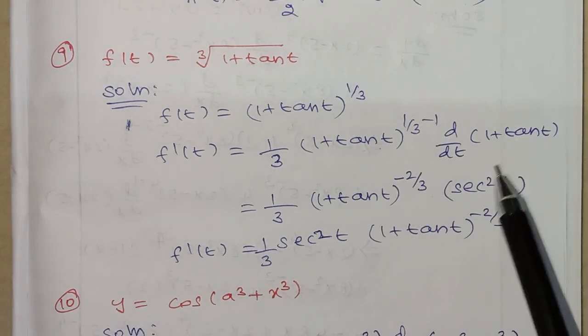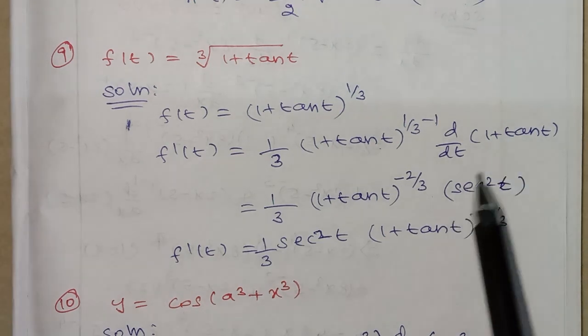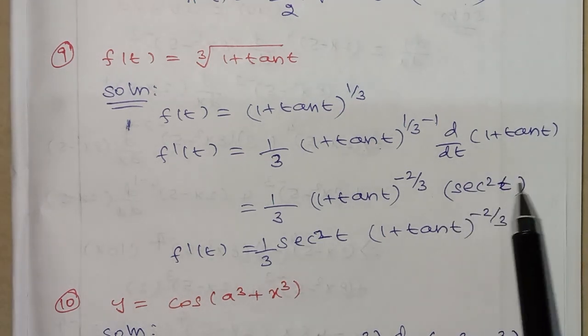1 plus tan t is the function. Derivative of 1 is 0. Derivative of tan t is sec square t.